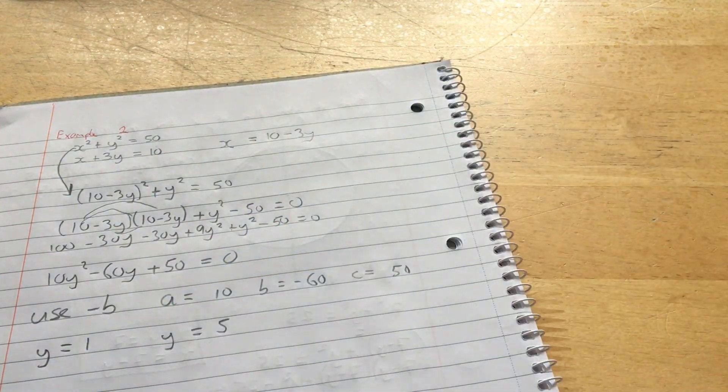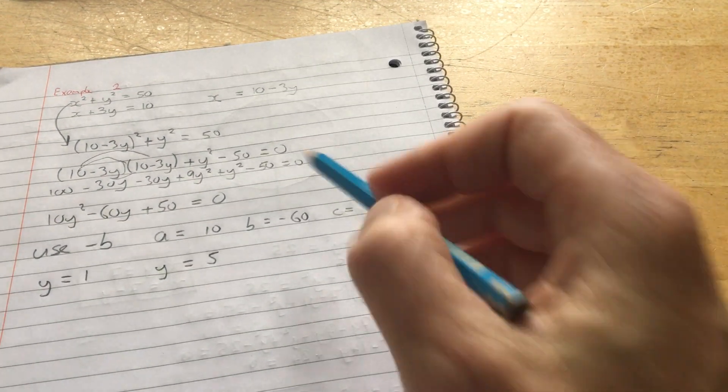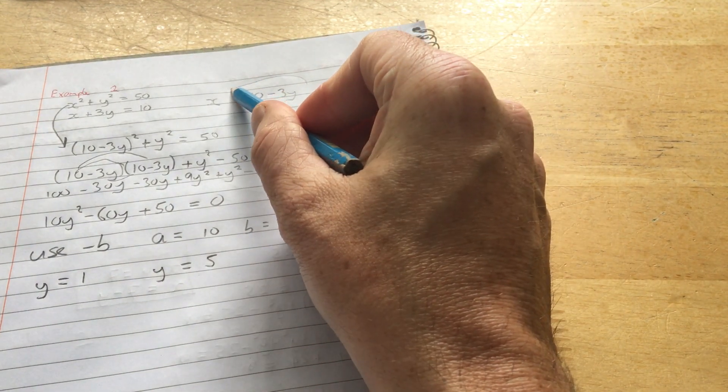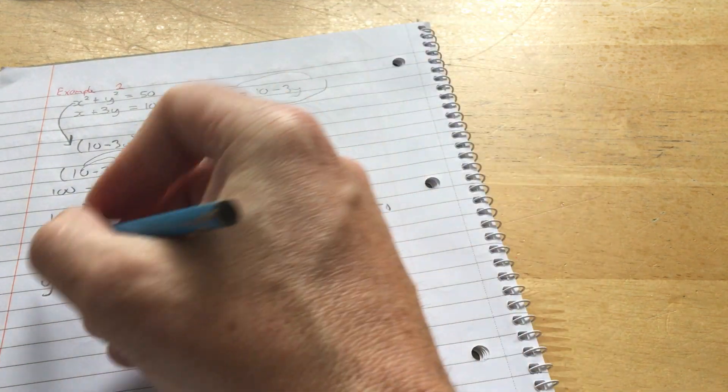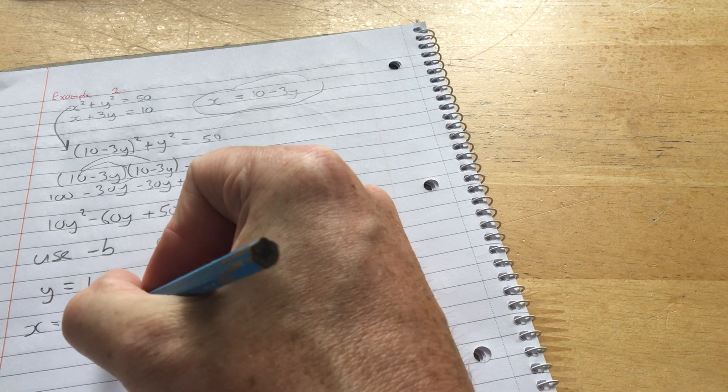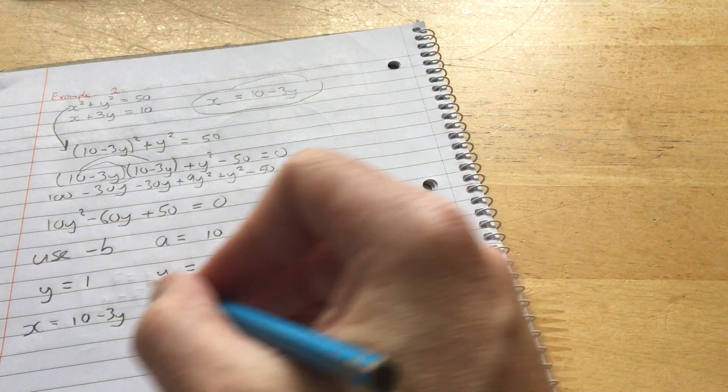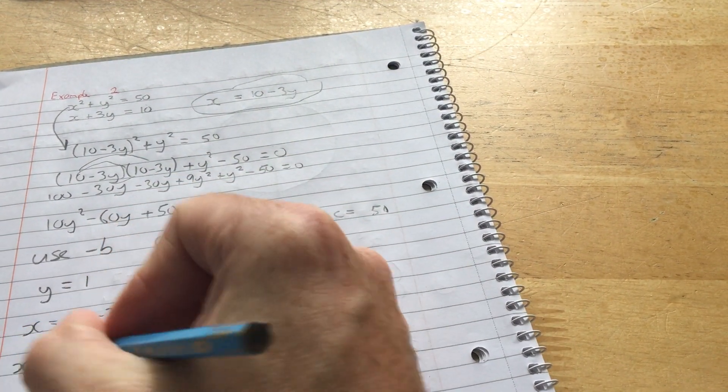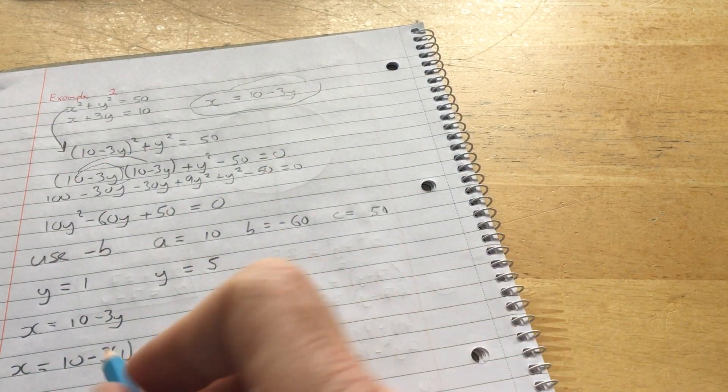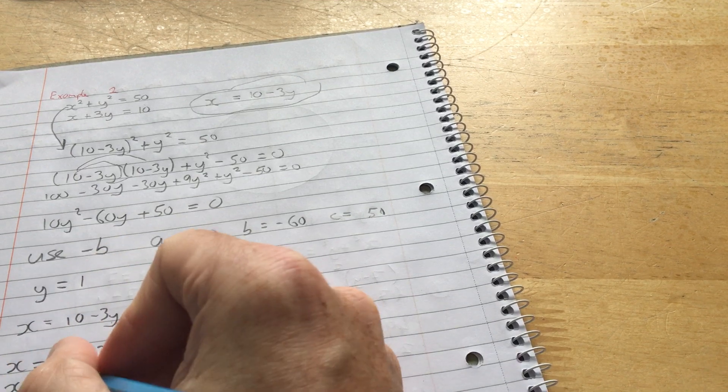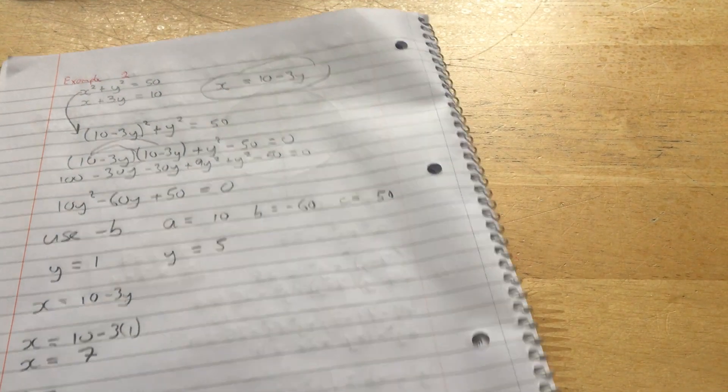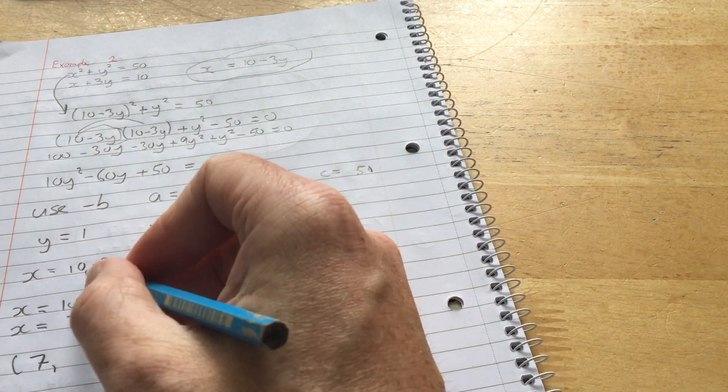I found two values for y. Therefore, there should be two values for x. I found them by using this equation up here. x equals 10 minus 3y. When y is 1, x is 10 minus 3 times 1. x equals 7. 10 take away 3 is 7. So the first point of intersection is 7, 1.